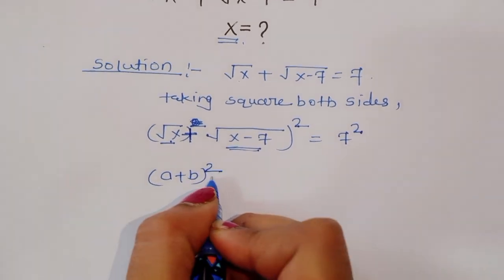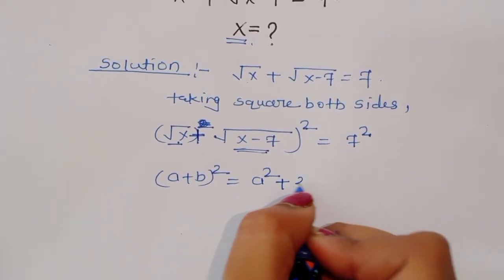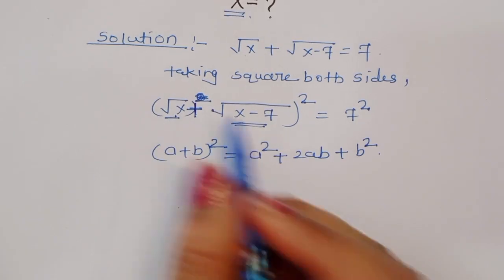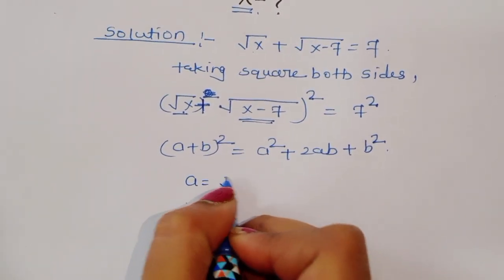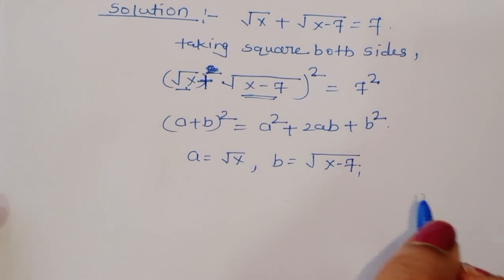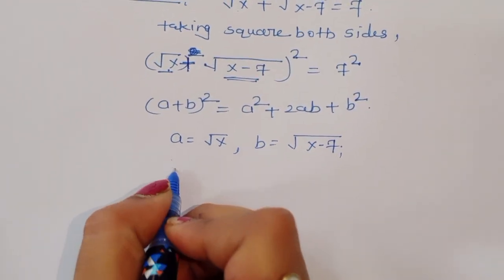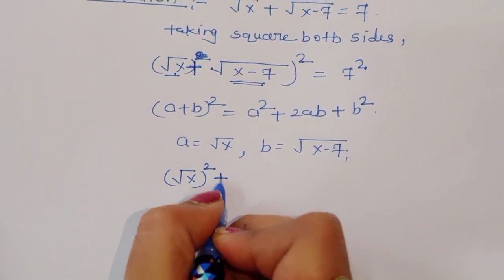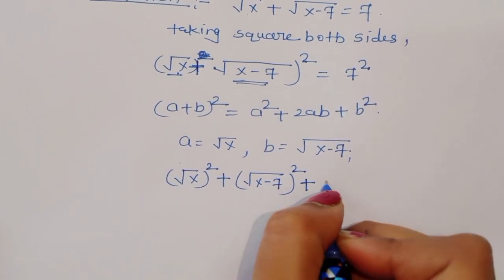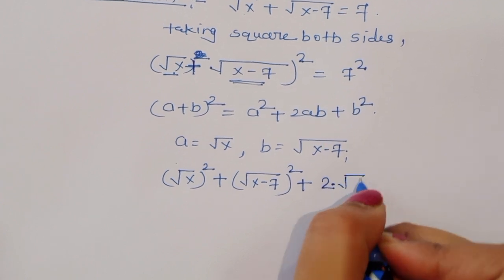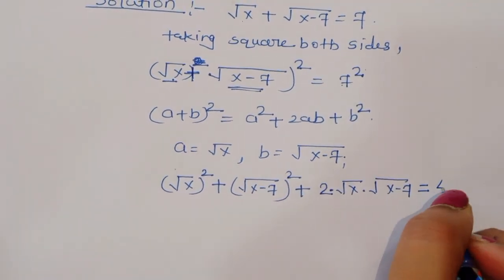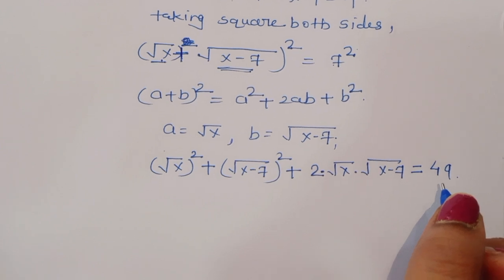This is an (a+b)² form, so we know the formula: a plus b whole square is equal to a square plus 2ab plus b square. Here a is equal to square root of x, and b is equal to square root of x minus 7. So a squared is x, b squared is x minus 7, plus 2ab, is equal to 7 squared, that is 49.